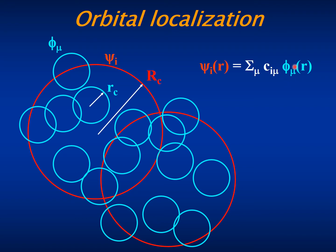SIESTA uses a linear combination of basis orbitals, which are also strictly localized within some radius that will be different for each basis orbital.